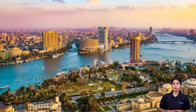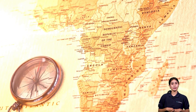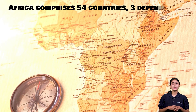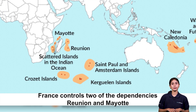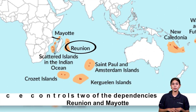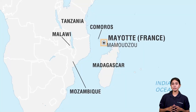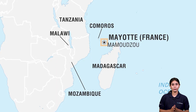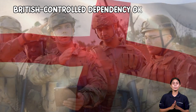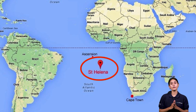Despite its stability, the sub-region still faces internal conflicts and ongoing economic stagnation. Let us know about the other African territories. Africa comprises 54 countries, three dependencies and one disputed territory. France controls two of the dependencies, Reunion and Mayotte, which are the most populous with around 895,000 inhabitants. Mayotte is in the Comoro Islands off the coast of Mozambique and borders the Comoros. The least populated territory is the British-controlled dependency of St. Helena, located off the coast of Middle Africa.